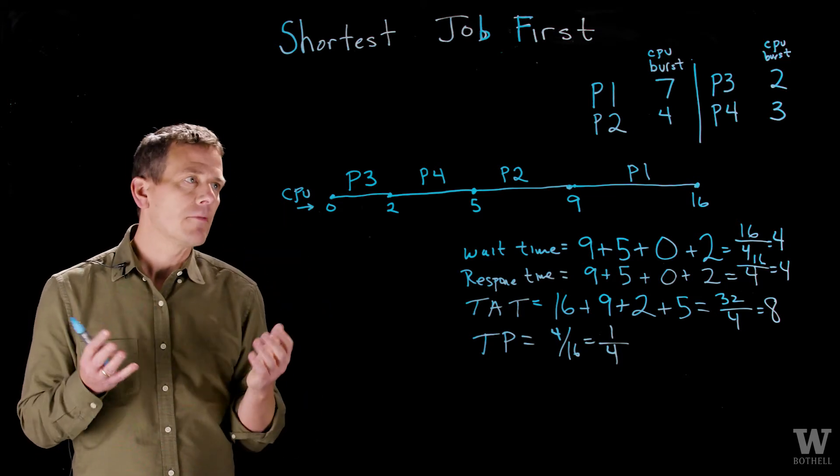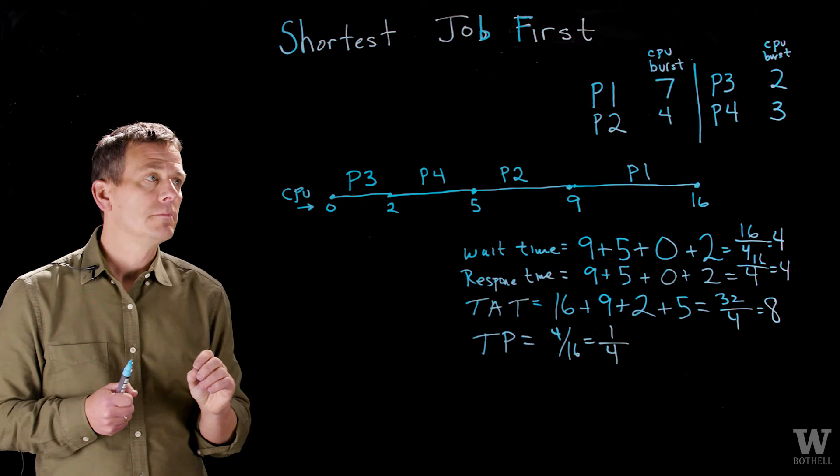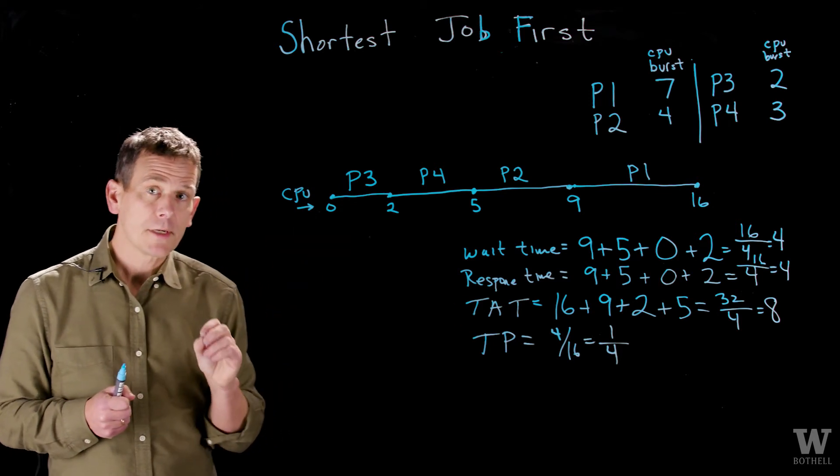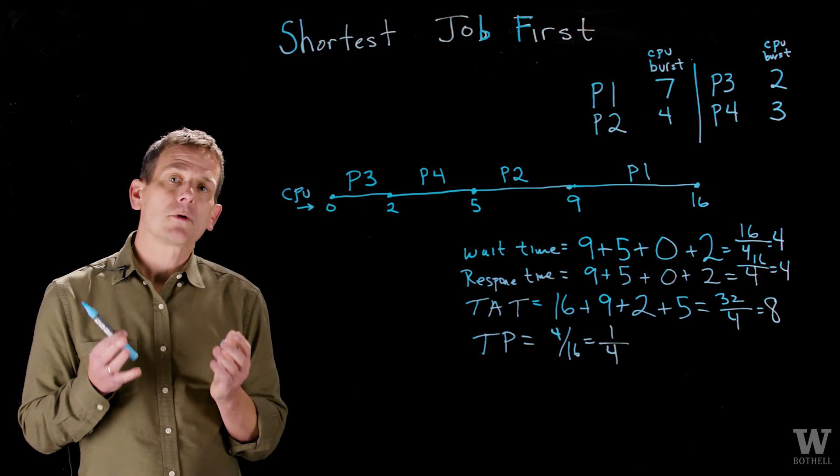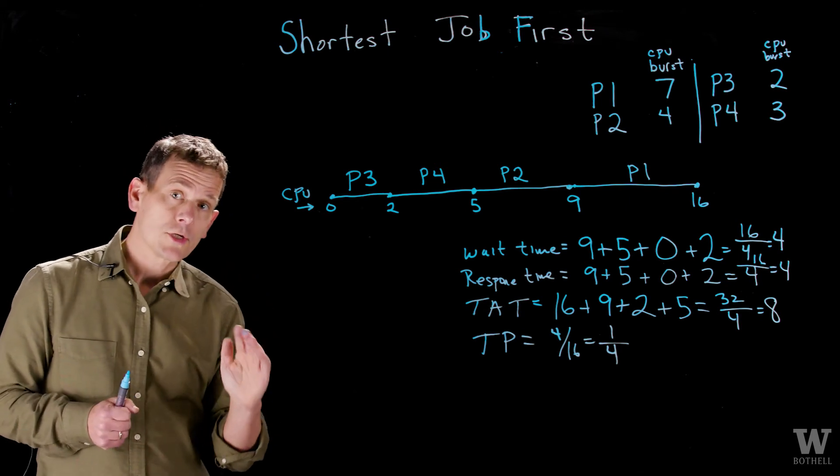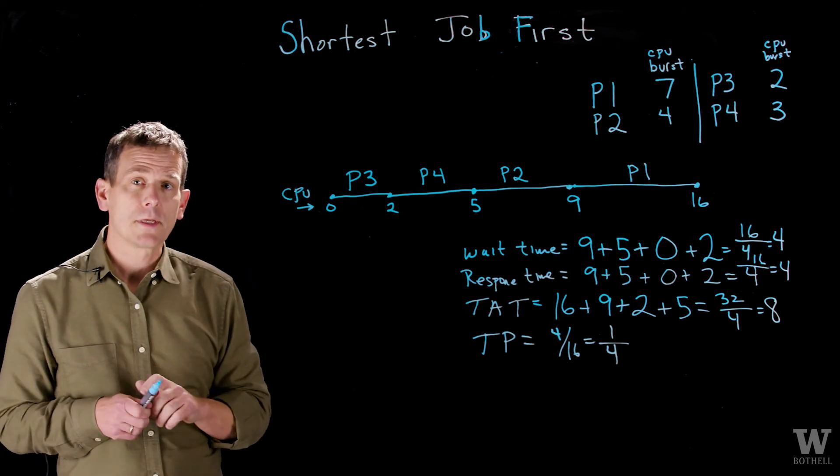This in itself is not really shortest job first - it's an approximation of shortest job first. And most schedulers today use some sort of I/O boost to push shorter jobs higher up in priority so they get run more frequently.